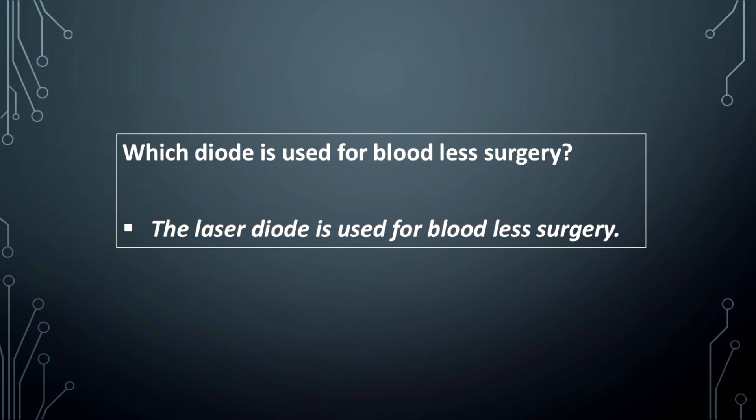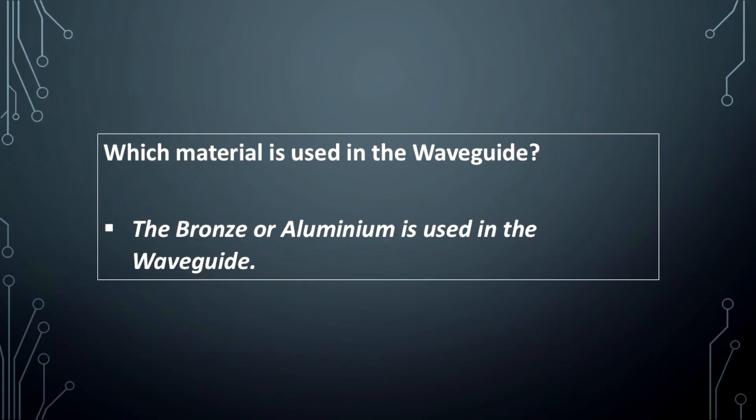Which diode is used for bloodless surgery? The laser diode is used for bloodless surgery. Which material is used in the waveguide? The bronze or aluminum is used in the waveguide.